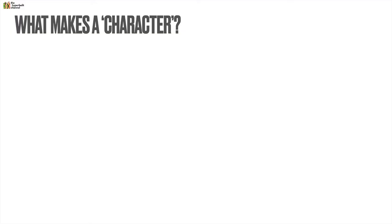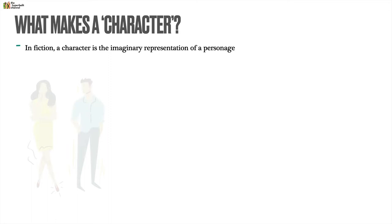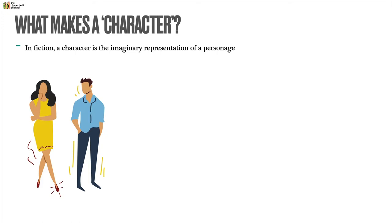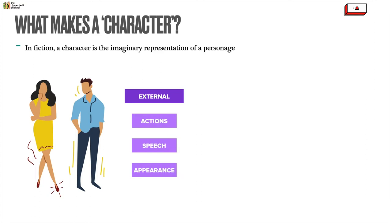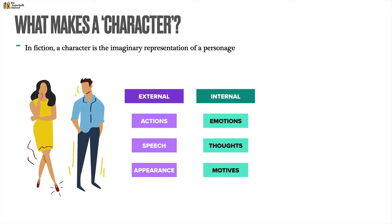Let's jump straight into topic one: characterisation. What makes a character? Well, in fiction, a character is basically the imaginary representation of a personage — essentially a person, but a fictional or imaginary one. Characters are essentially made up of external traits such as actions, speech and appearance.